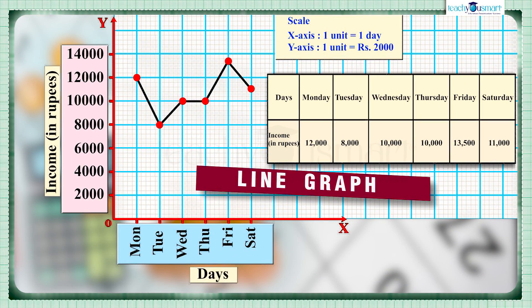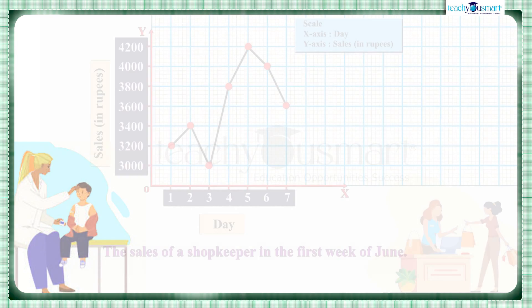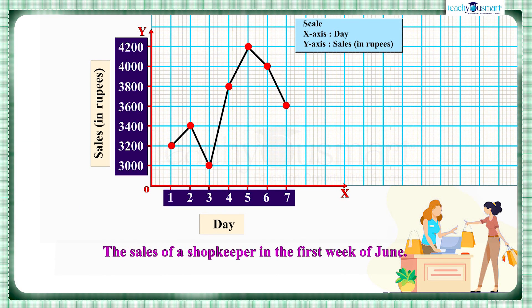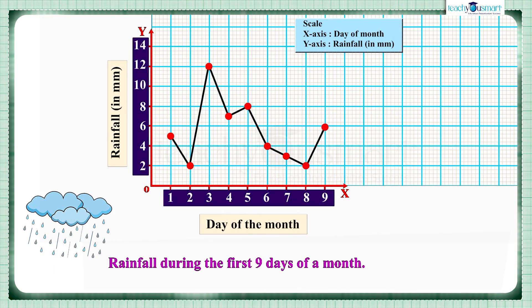We get a line graph from many daily life situations like the temperature of a patient taken at different times in a day, the sales of a shopkeeper in the first week of June, rainfall during the first nine days of a month, etc.